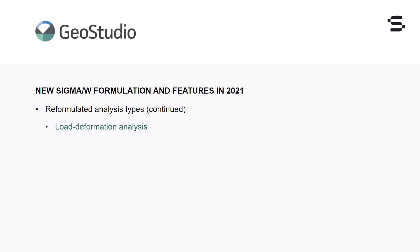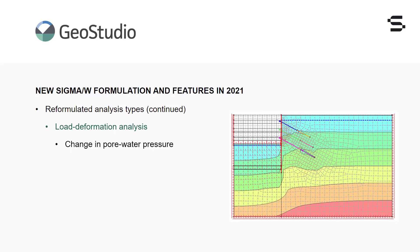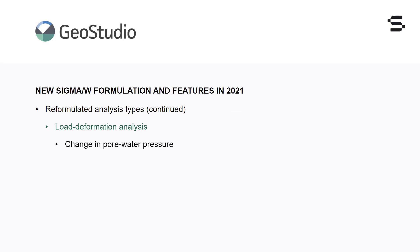A number of improvements have been made to the load deformation formulation in Sigma W to ensure that the complex problems faced by geotechnical engineers in the civil and mining sectors can be modelled with accuracy and simplicity. Sigma W now calculates the change in pore water pressure in load deformation analyses. This functionality assists with analyses where changes in pore water pressure cause complications during construction, for example in deep excavation projects. A consolidation analysis could be used for this class of problem; however, time constraints and the inability to parameterize the hydraulic properties often make it necessary to use a load deformation type of analysis instead.